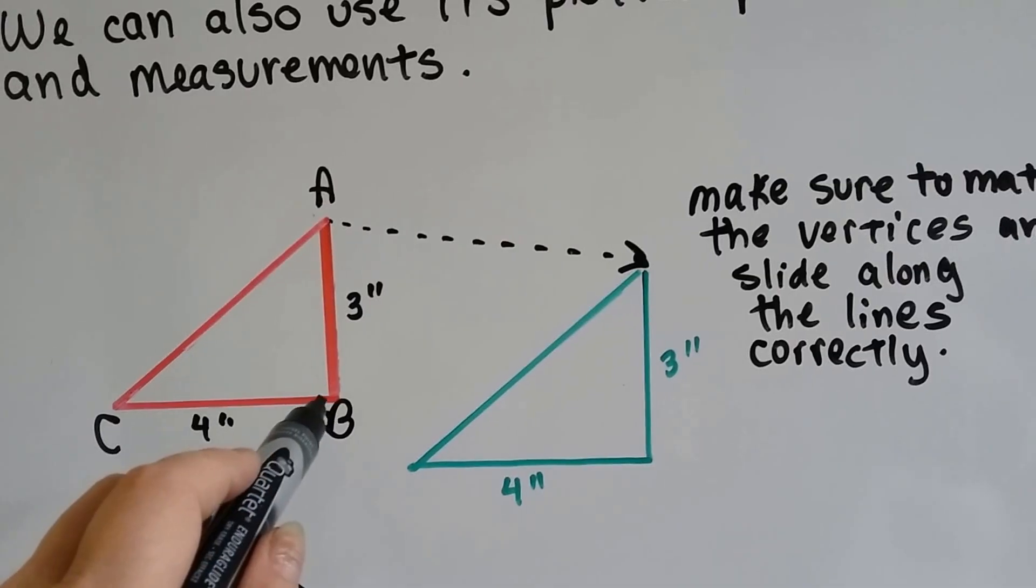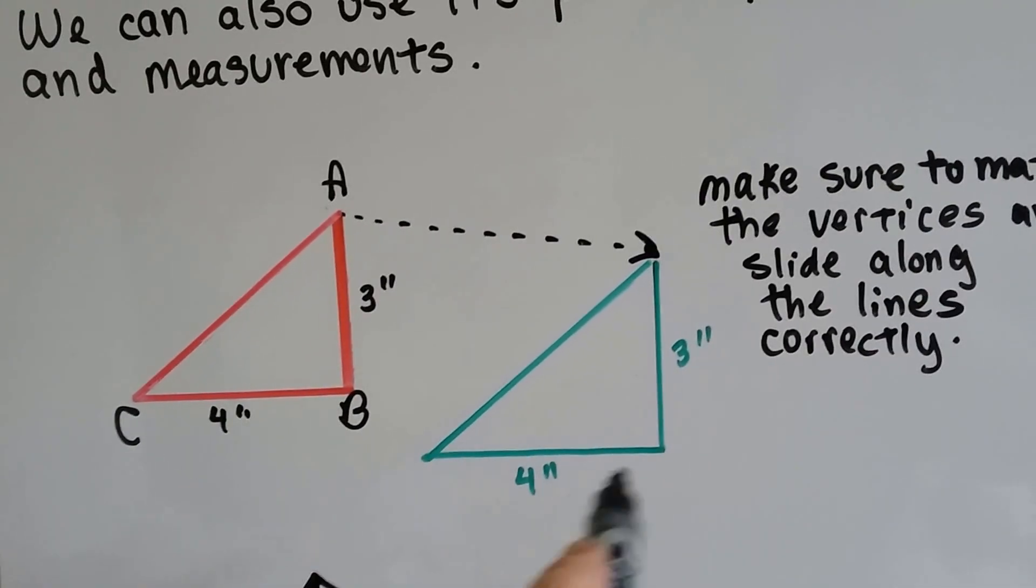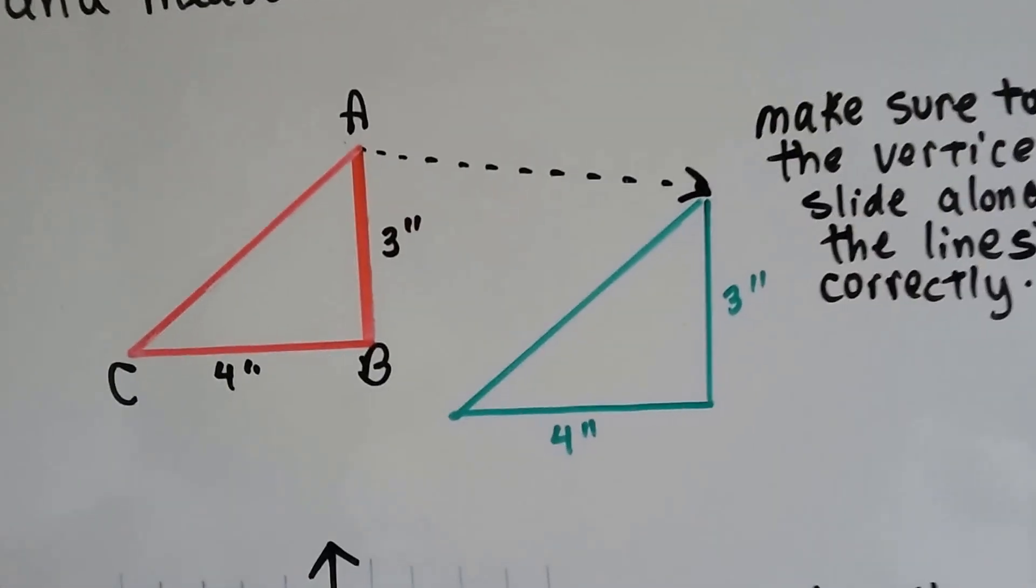We see that it's a right angle, so we know BC is going to be a 90-degree angle. We measure this one, it's 4, and then we draw in the hypotenuse.